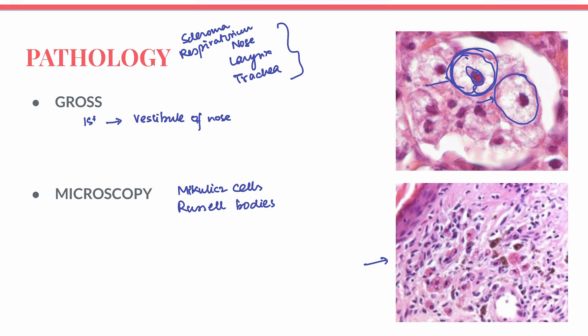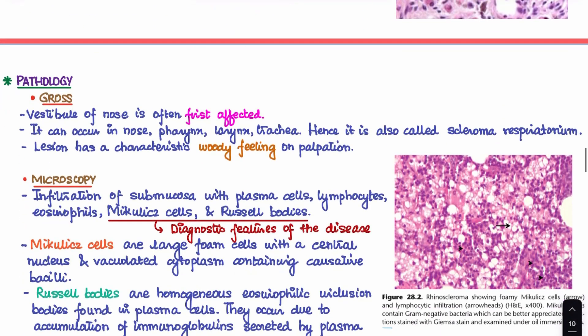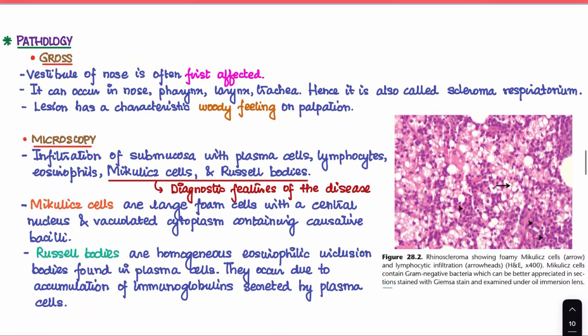Russell bodies are homogeneous eosinophilic inclusion bodies found in plasma cells. They form because of an accumulation of immunoglobulins secreted by the plasma cells. These two histological features — Mikulicz cells and Russell bodies — are the diagnostic features of this disease. Additionally, there is an infiltration of the submucosa with plasma cells, lymphocytes, and eosinophils.